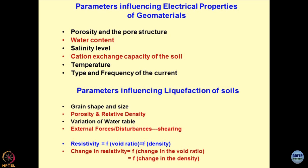Which current is non-heating type and which is heating? DC is a heating current and AC is a non-heating current. If you are using DC current, the chances are that soil properties in terms of moisture content would get altered because of heating of the sample. That is the reason most of the time, high frequency AC is used for these measurements. The resistance offered by the material when using high frequency AC is known as impedance — impedance is the resistance which is dependent upon the frequency of the current.